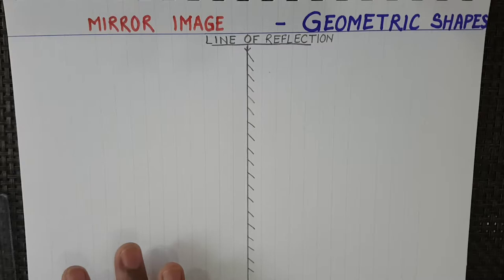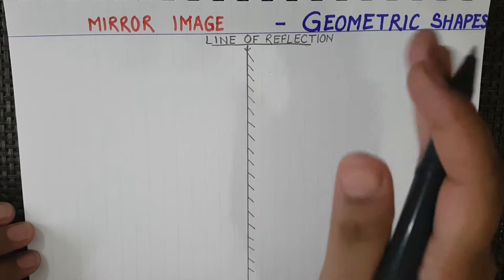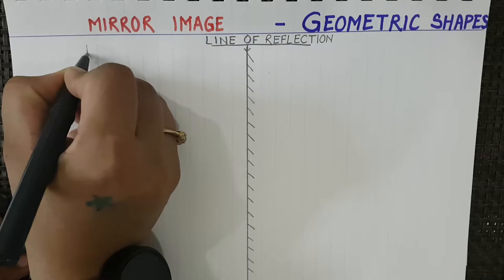On the left-hand side we have the pre-image — that is the image we start with. And on the right-hand side we will have the reflection.